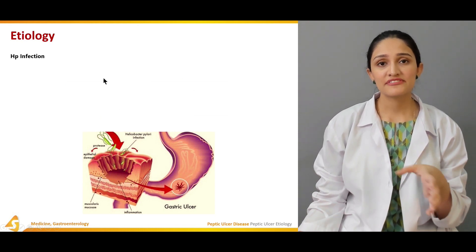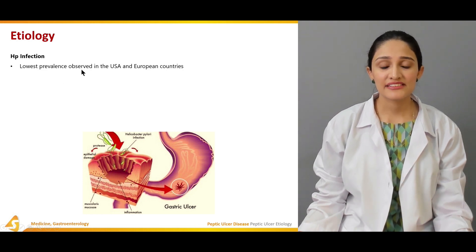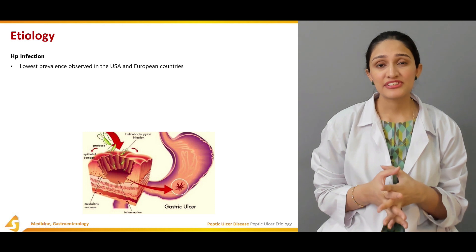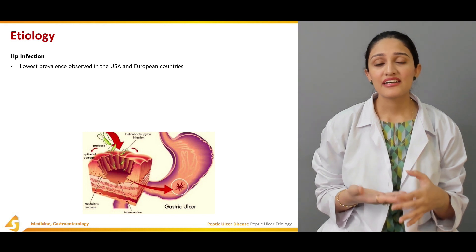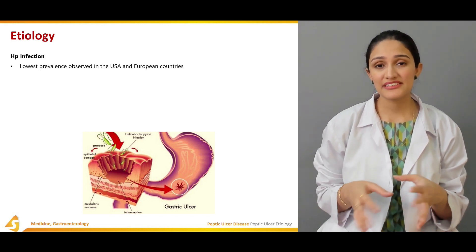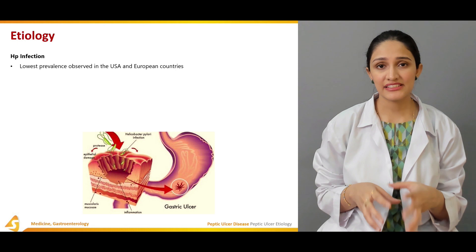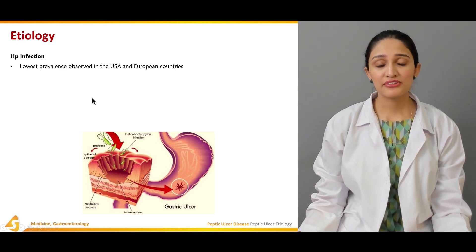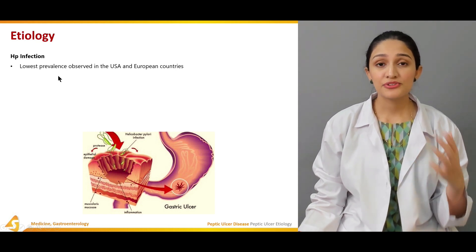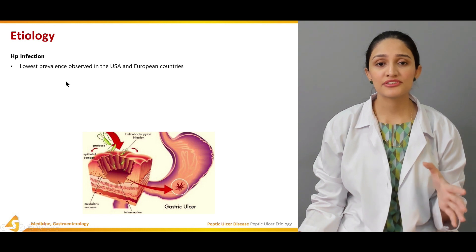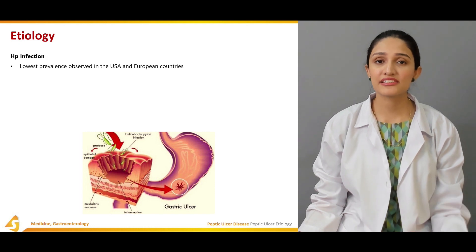Helicobacter pylori infection is nowadays declining, and as it declines, peptic ulcer disease is also declining. However, Helicobacter pylori infection still remains the most major cause of peptic ulcer disease worldwide. USA and European countries have the lowest prevalence of peptic ulcer disease due to very low rates of Helicobacter pylori infection.